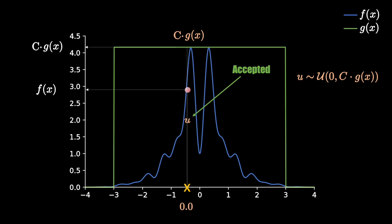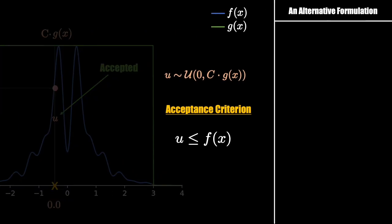That said, we are now ready to mathematically represent our acceptance criteria. Which is to accept only if U is less than or equal to the result of our target function evaluation.